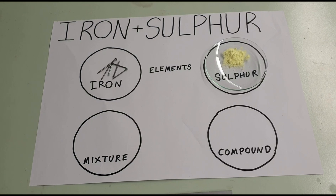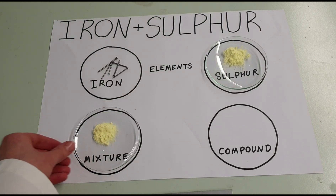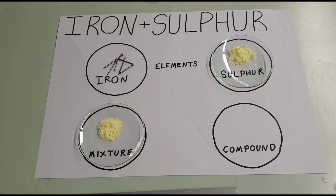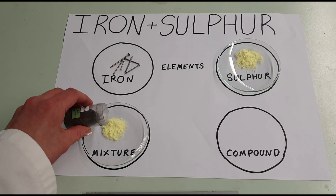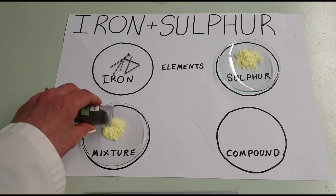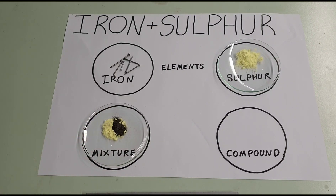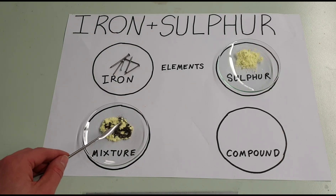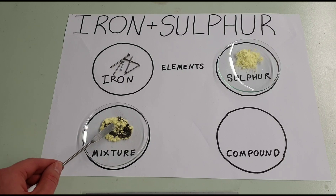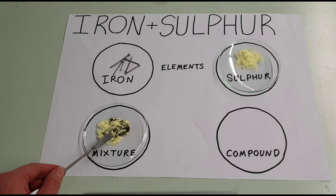What will happen when I mix the iron and sulfur together to create a mixture? I'm just going to pour a little bit of iron in the form of iron filings so it mixes easier with the powder. Take a spatula and if I mix them, these two elements have now formed a mixture, which means they should still be able to be separated.